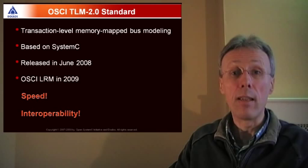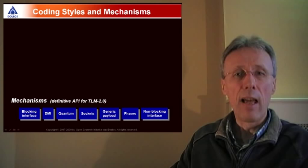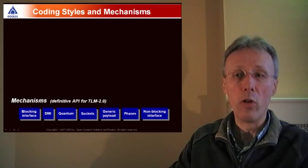TLM 2.0 is architected into three layers. The foundation layer is a set of mechanisms. These are the definitive C++ API for TLM 2.0. So this includes blocking and non-blocking interfaces, direct memory interface, quantum keeper, sockets, generic payload and phases.